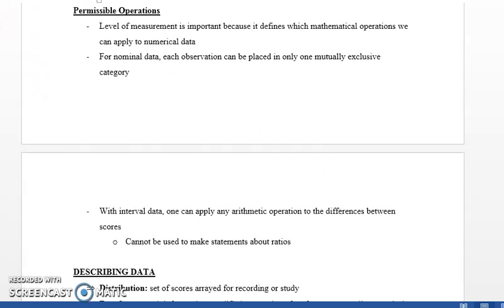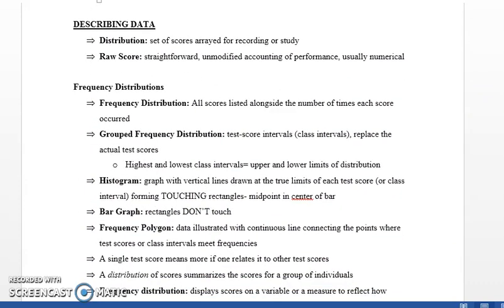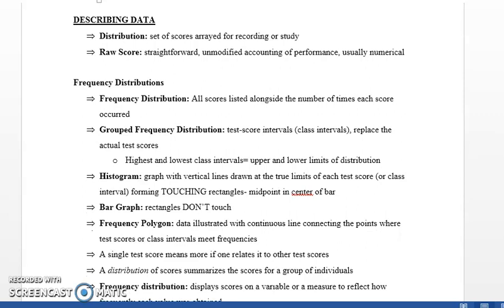Permissible operations: We cannot do mathematical operations on nominal scale—only percentage counts. The same with ordinal scale. We can apply mathematical operations on interval scale, but we cannot find out ratios.